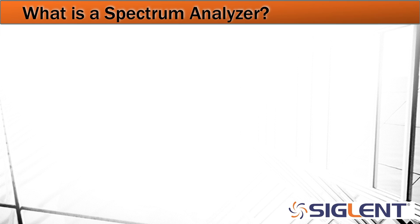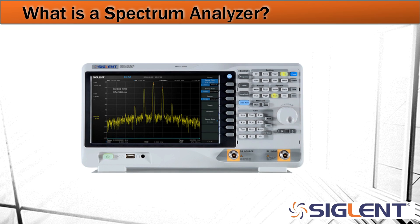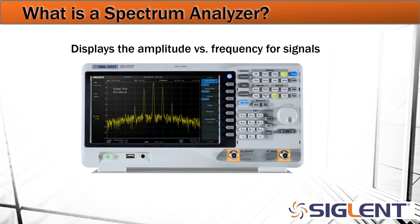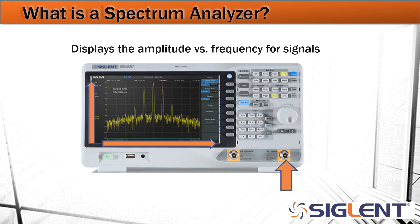So what is a spectrum analyzer? A spectrum analyzer is a test instrument that displays the amplitude versus frequency for an input signal. Here we've got a picture of the Siglent SSA3000X series of spectrum analyzer. As you'll notice it's got an RF input here, and it's just going to display the amplitude versus frequency for an input signal.